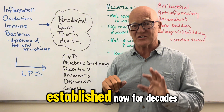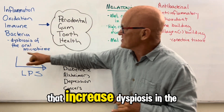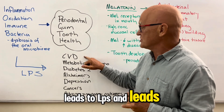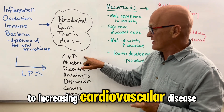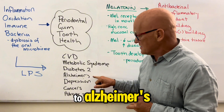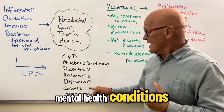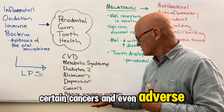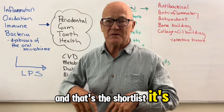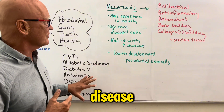This has been well established for decades: increased dysbiosis in the mouth and your oral microbiome leads to LPS and leads to an increase in cardiovascular disease, metabolic syndrome, diabetes, Alzheimer's, depression and other mental health conditions, certain cancers, and even adverse pregnancy outcomes. And that's the short list — it's a much greater list. So the link with all of these conditions of periodontal disease is significant.